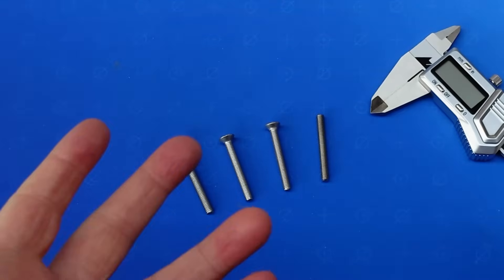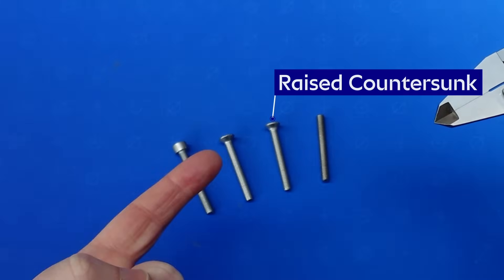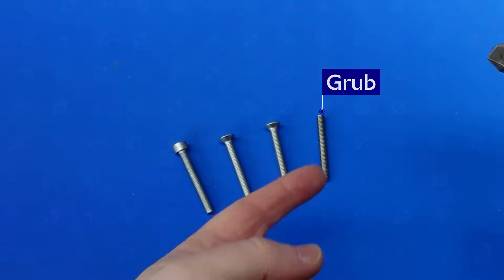Right, so here we've got a selection of screws, all the different head types and our pair of calipers. We've got a cap head, counter-sunk, raised counter-sunk, which are a little less common but a great example for this video, and finally a grub screw.